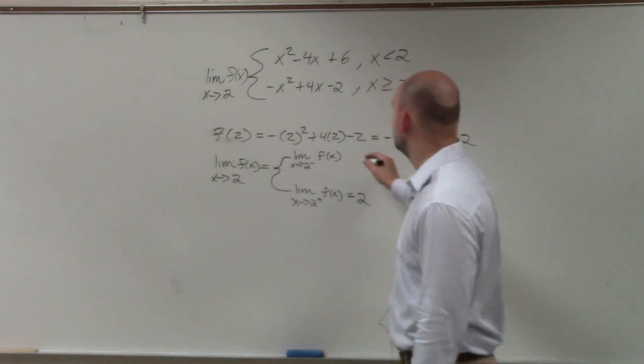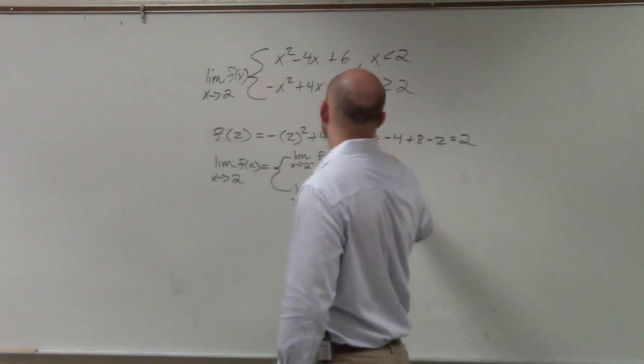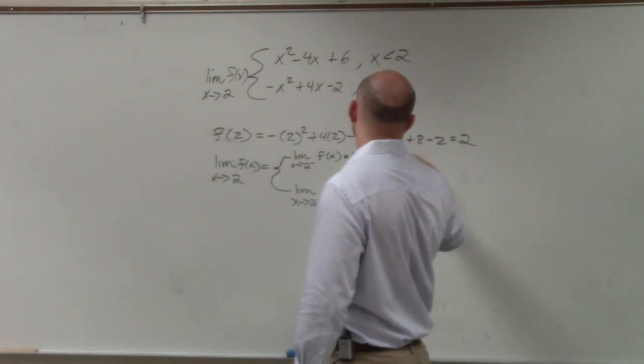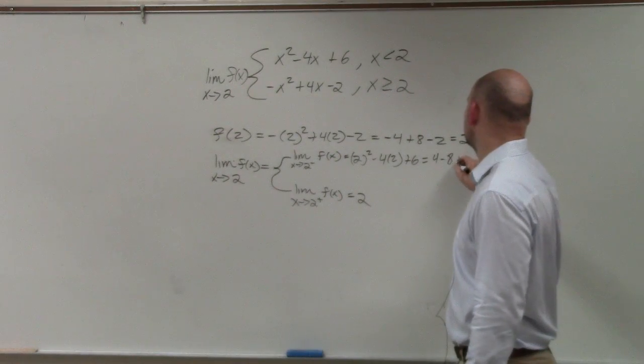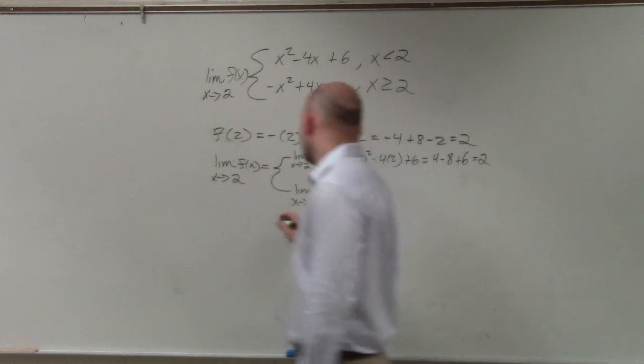When I evaluate from the left, I do 2 squared minus 4 times 2 plus 6. So that's 4 minus 8 plus 6, which equals 2.